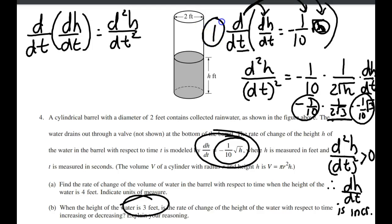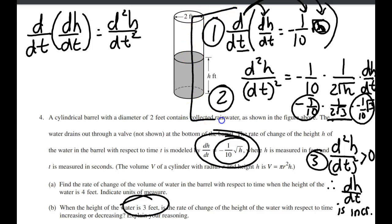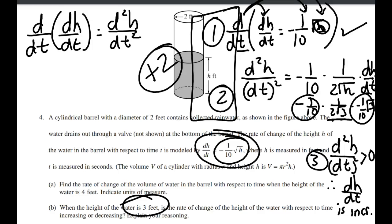So what do we do here? Step one, find the derivative. Step two, plug in the values they give us. Step three, interpret the results. So: derivative, plug, interpret. How would they be grading this? It's worth three points. These two steps — finding the derivative and doing that process correctly — are worth two points. The third step, interpreting the result and saying since the second derivative is greater than 0, dH/dt is increasing, is worth one point. So that's a three-point question.